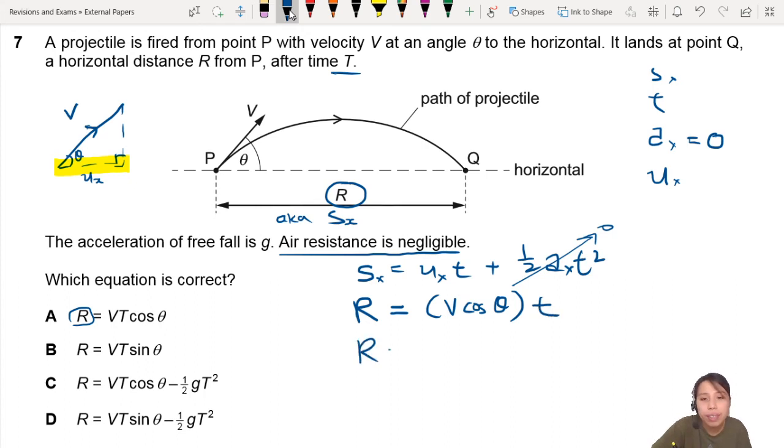All right. So what we have is R equals to V T cos theta. So that is the final answer.